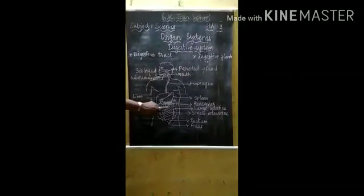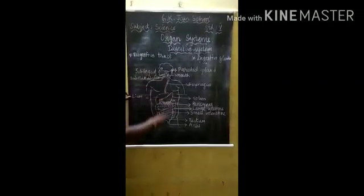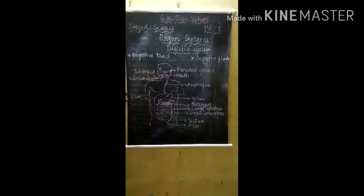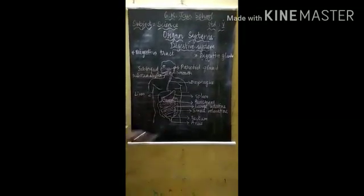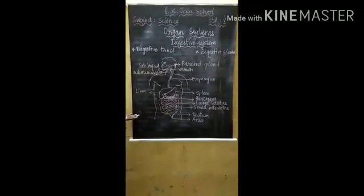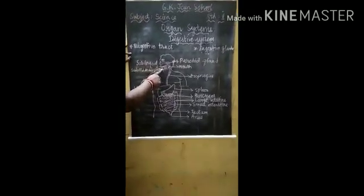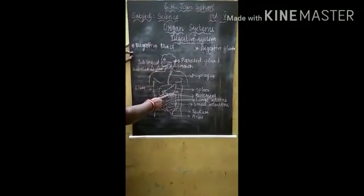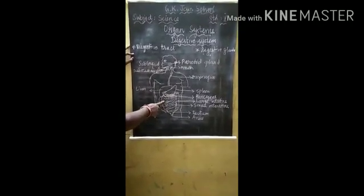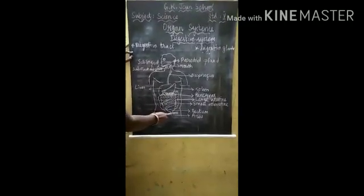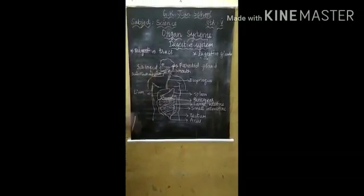It is a coiled muscular tube extended from the mouth to anus. It is about 6 to 9 meters long and it consists of many organs. They are arranged one by one like mouth, buccal cavity, esophagus, pancreas, large intestine, small intestine, rectum and anus. These organs take part in the digestion process.